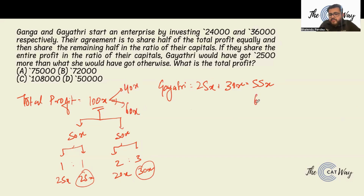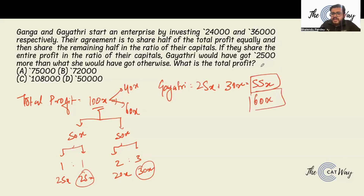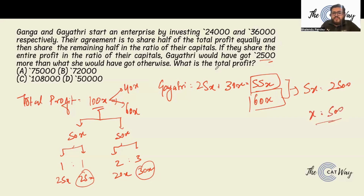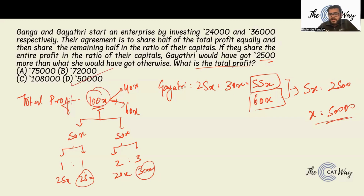In the other case Gayatri would have gotten 60x, so the difference is 60x minus 55x equals 5x. It's given this gap is 2,500, so 5x equals 2,500, meaning x equals 500. The total profit is 100x, so 100 multiplied by 500 gives 50,000 rupees. Option D is the correct answer.